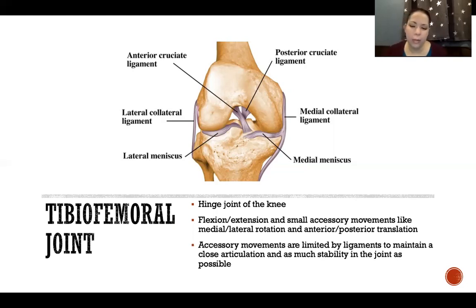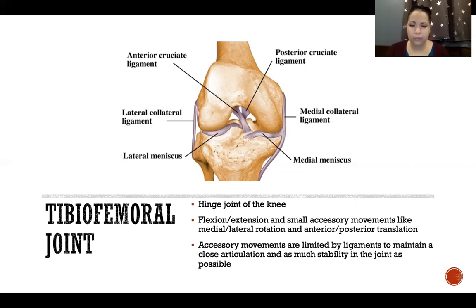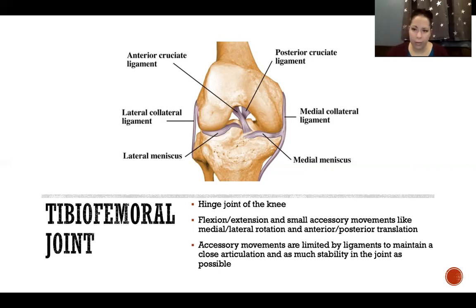Accessory movements are limited by ligaments to maintain close articulation and as much stability as possible. These bones are not super congruent in terms of how they're shaped, so it's really important that we have inert structures like ligaments and the joint capsule to maintain stability and strength. We're carrying our whole body weight on the tibiofemoral joint, with very high forces during running, jumping, and all kinds of different activities.